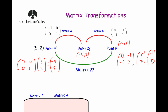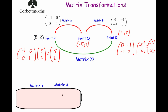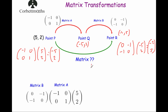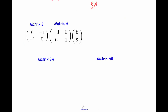We applied matrix A to get Q, then matrix B to get R. The order when multiplying matrices is important. The combined transformation matrix that brings us straight from P to R is the matrix BA — matrix B times matrix A. Let's multiply these two matrices to find BA, then verify it gives the correct result.